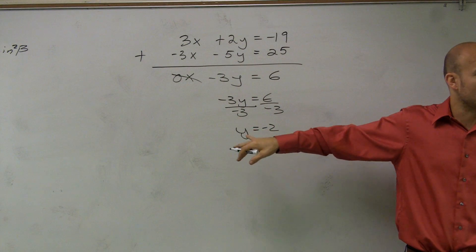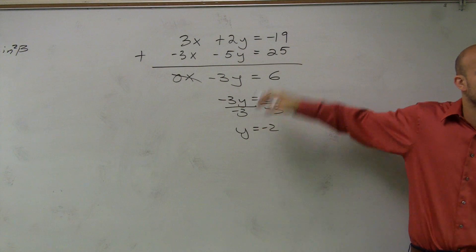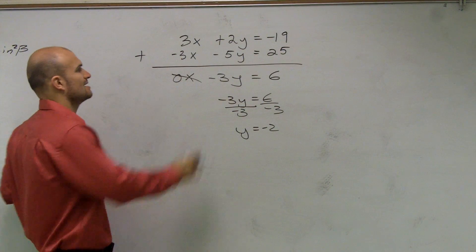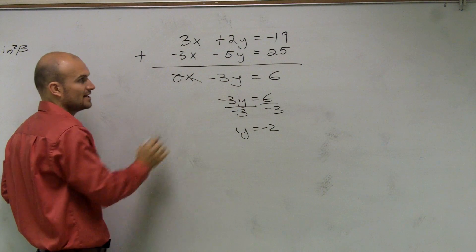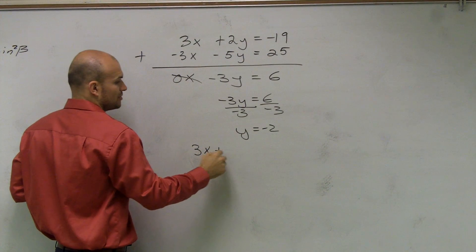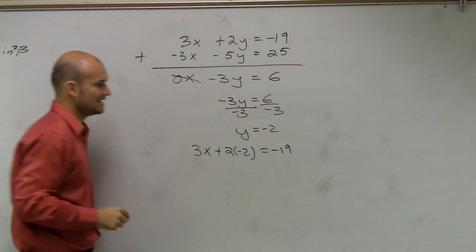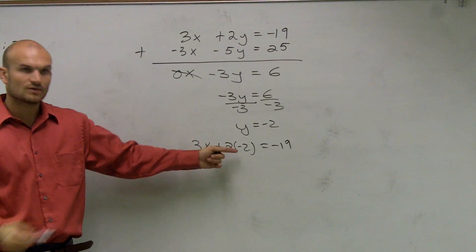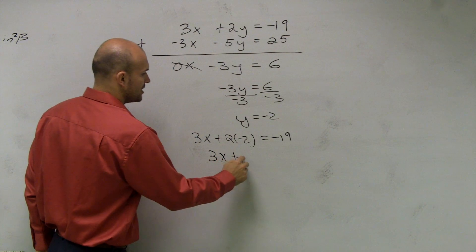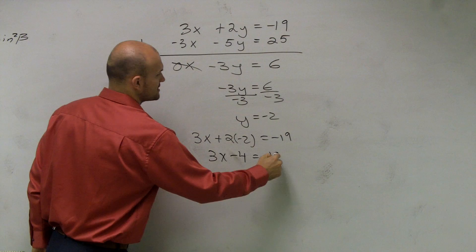So now I need to find the value of x. So since I know y equals negative 2, I can substitute negative 2 in for the y variable. And it doesn't matter which one you pick to solve for x. I usually don't like to deal with the negative. So I'm going to plug negative 2 in for y into the top equation. So I have 3x plus 2 times negative 2 equals negative 19. Well now, ladies and gentlemen, we just can solve for x. So I have 3x minus 4 equals negative 19.